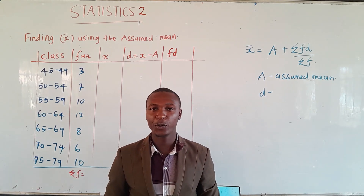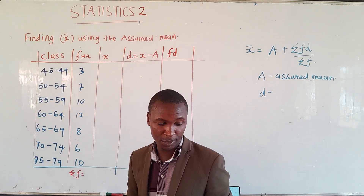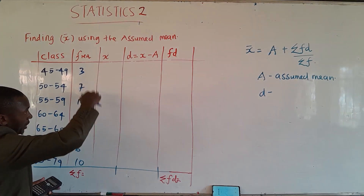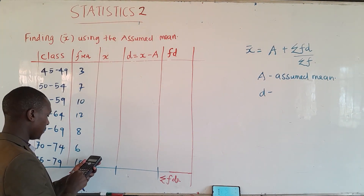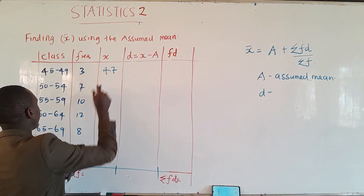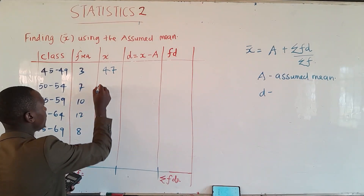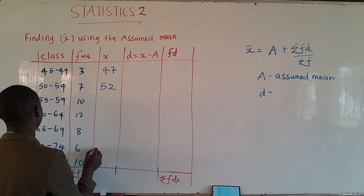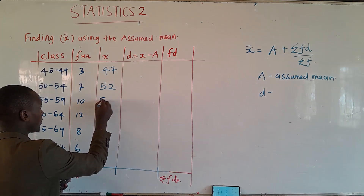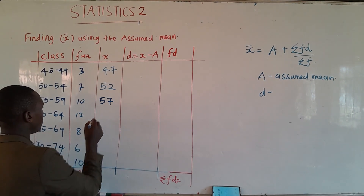To start with, we need to calculate the midpoint for each class. Let me grab a calculator. The first midpoint is (45 + 49) ÷ 2 = 47. Then (50 + 54) ÷ 2 = 52. The next one is (55 + 59) ÷ 2 = 57. Then (60 + 64) ÷ 2 = 62.